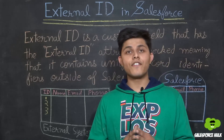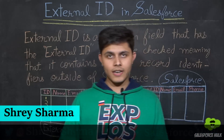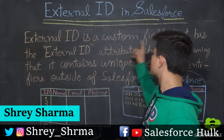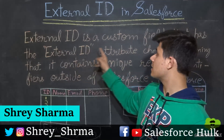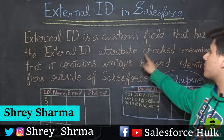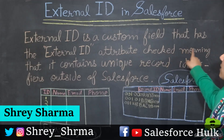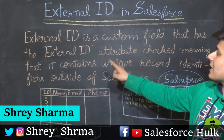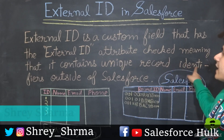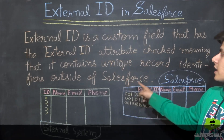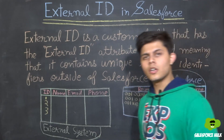Now let's have a look at the definition of external IDs. External ID is a custom field that has the external ID attribute checked, meaning that it contains unique record identifiers outside of Salesforce.